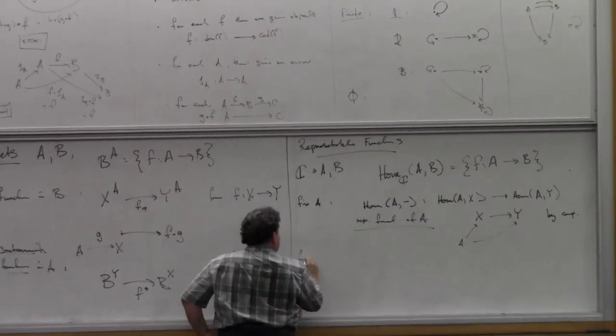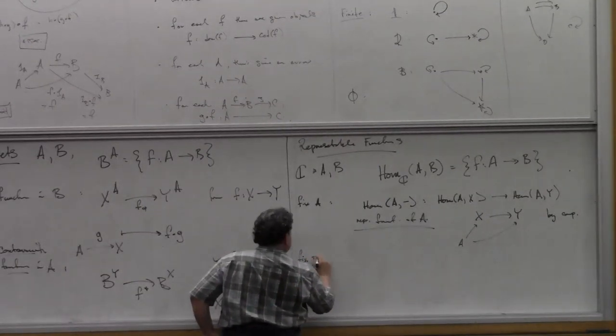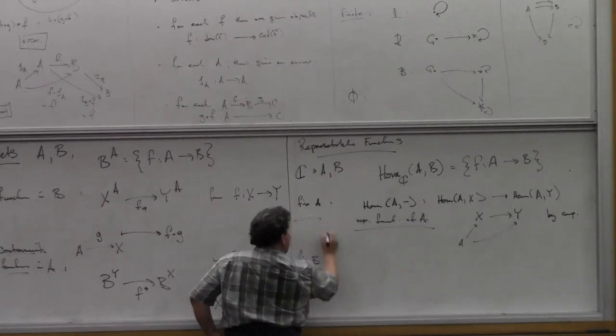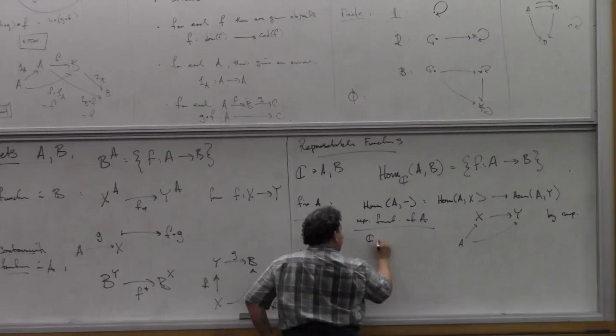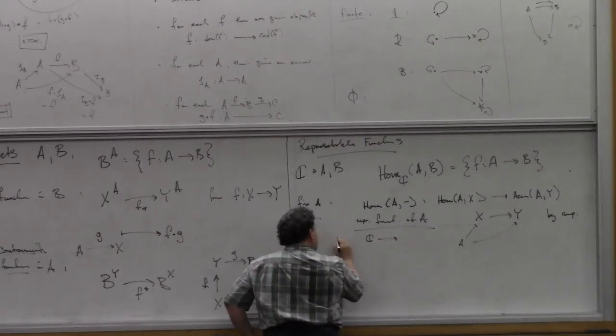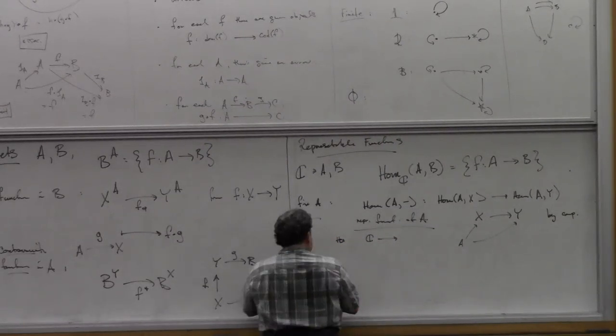Similarly, if I fix B, I get a controvert, so where does this go? The representable functor goes from C into... so the functor looks like this, HOM. I better write bigger, right?